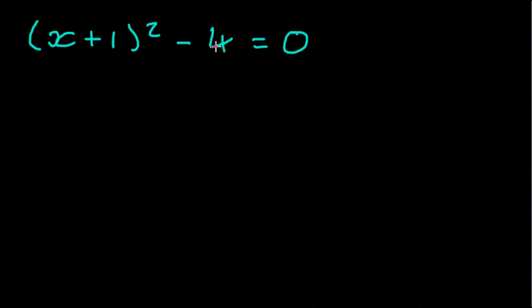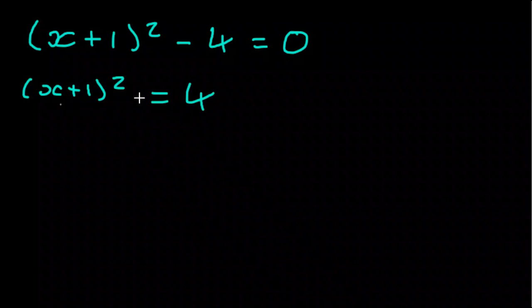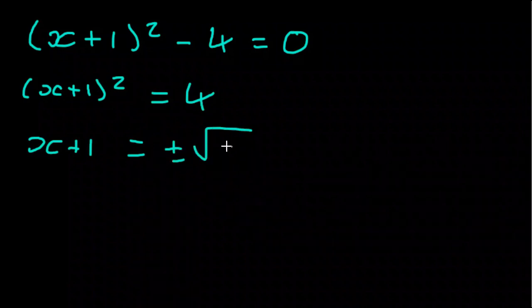So we're going to add 4 to both sides here. So we have x plus 1 squared equals 4 with the aim of isolating x. We're going to take square root. It's important to remember that when we take the square root, we're taking the positive and negative square root of 4. So that's plus or minus 2.